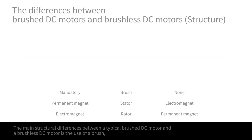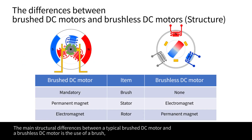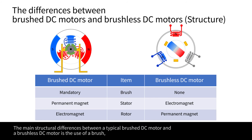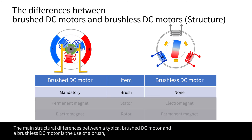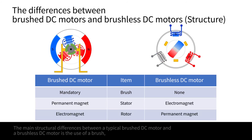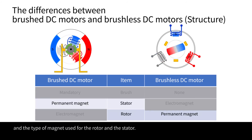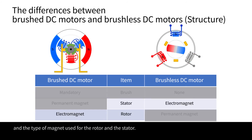The main structural differences between a typical brushed DC motor and a brushless DC motor is the use of a brush and the type of magnet used for the rotor and the stator.